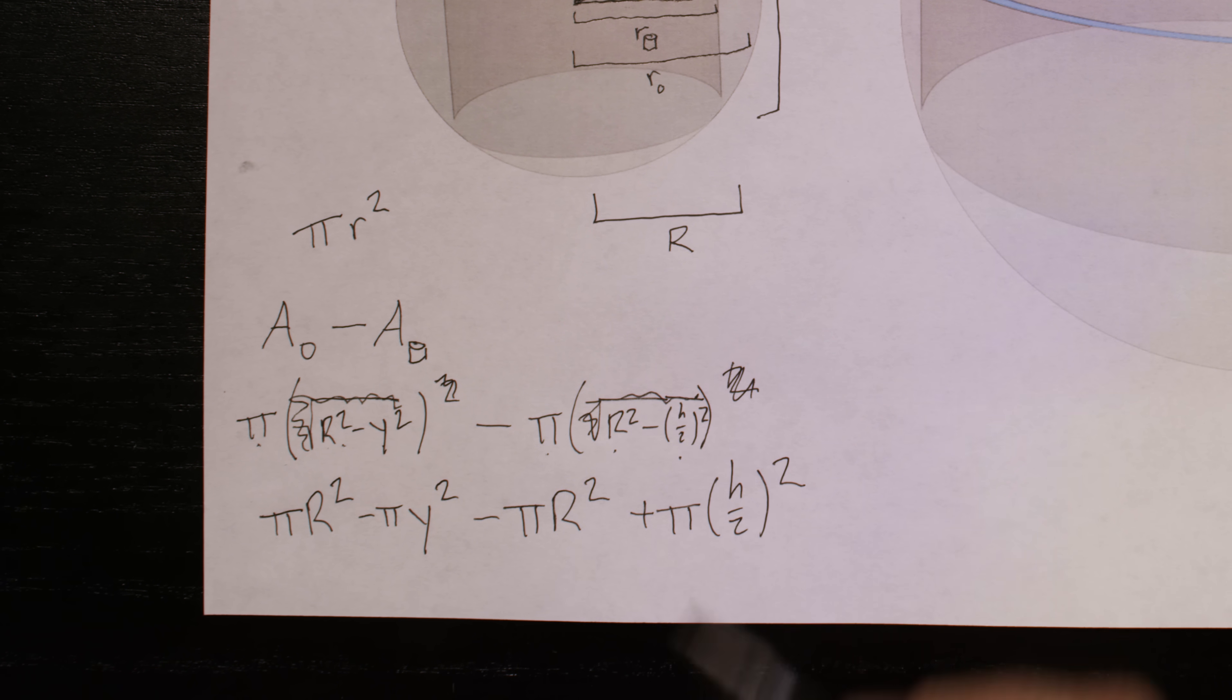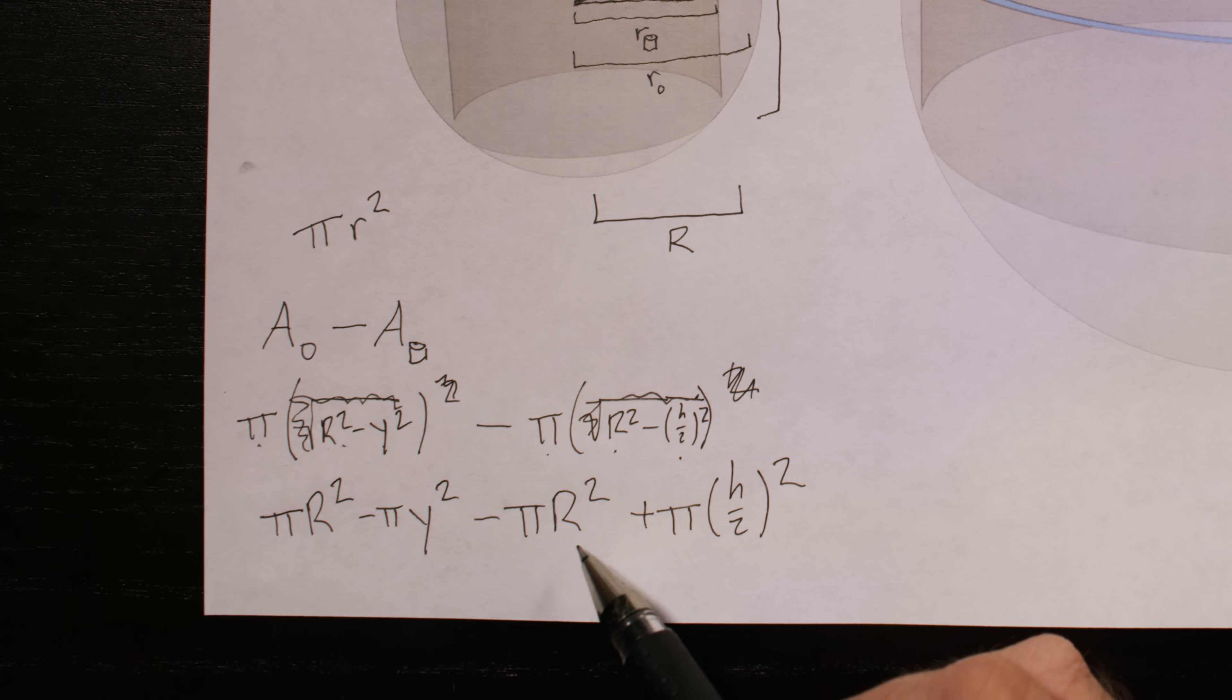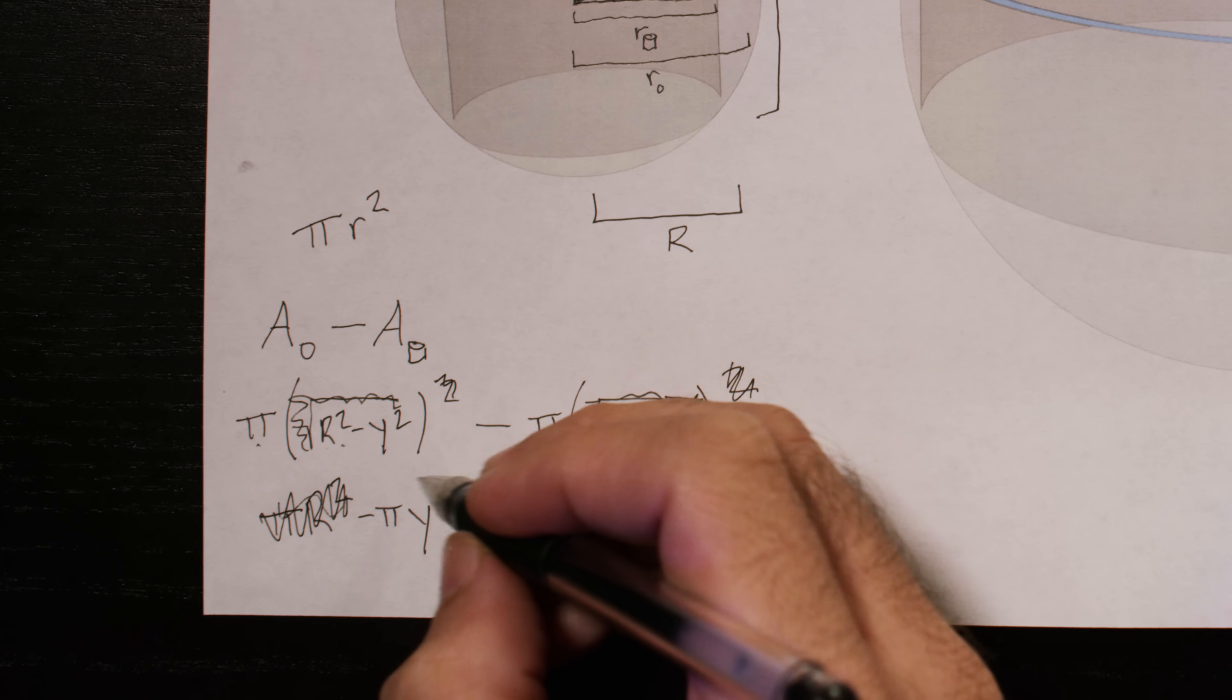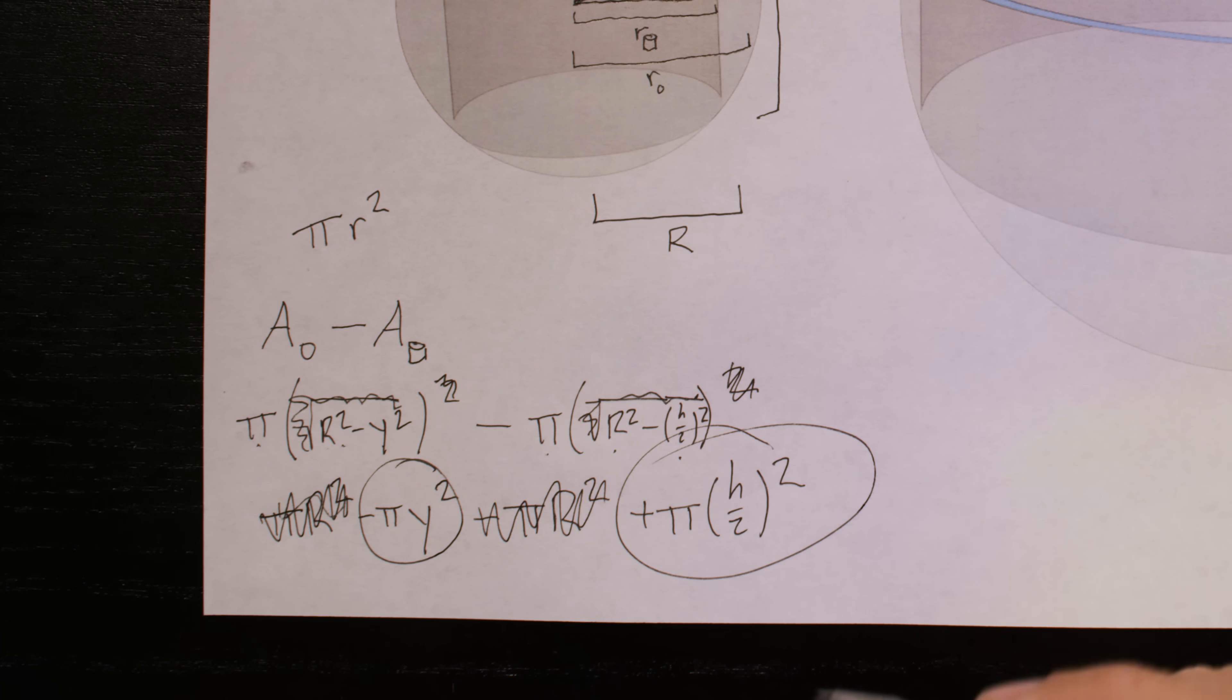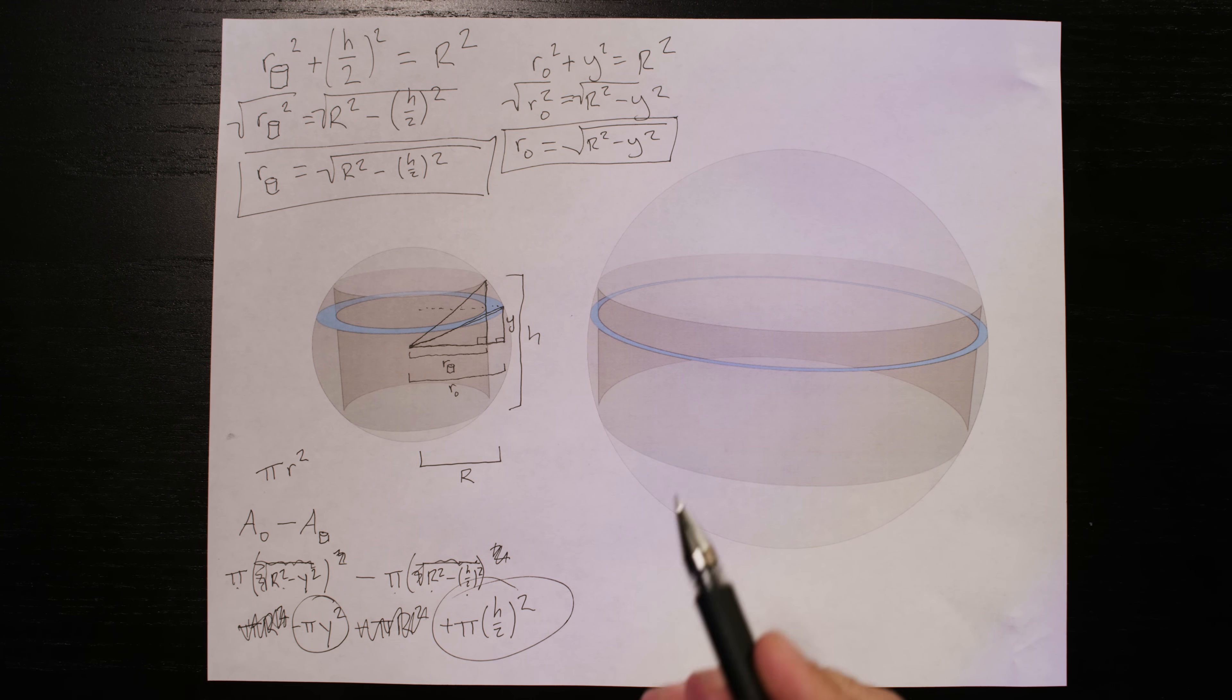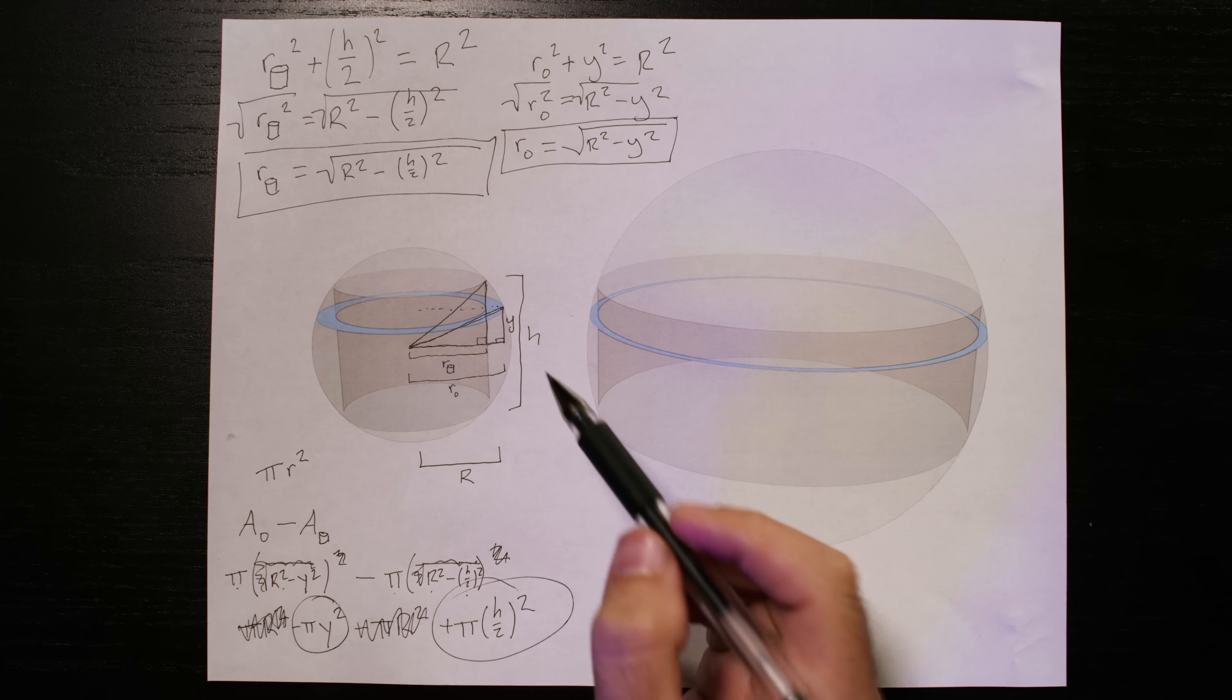Now we can keep simplifying, but what you might notice is that we have a pi R squared and a minus pi R squared. Well, that just equals zero. So these completely cancel each other out. But what we're left with are terms containing no mention of the sphere's radius. Whether the radius is large or small doesn't matter. All you need to know to find the area of the cross section of a napkin ring is the height of the napkin ring.